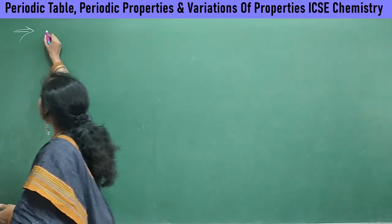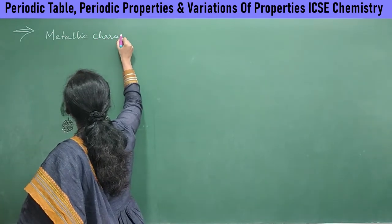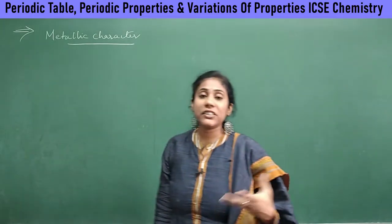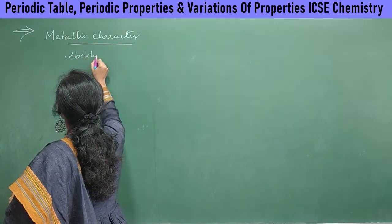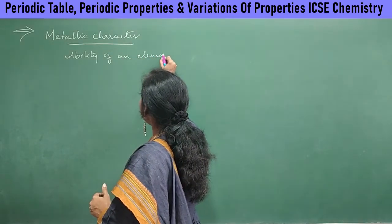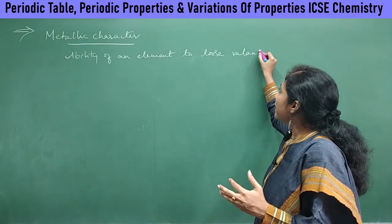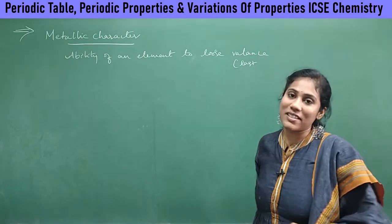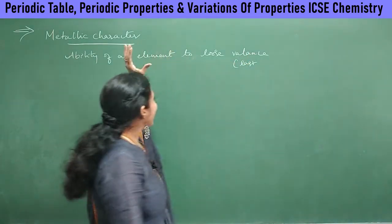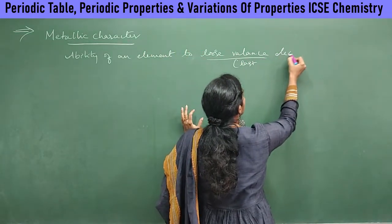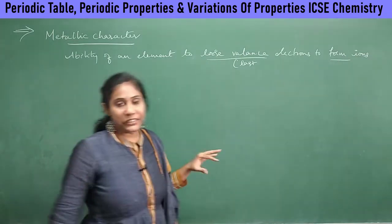Metallic character is dependent on size. Let us understand what exactly we mean by metallic character. It is the ability of an element to lose valence electrons — the electrons present in the last shell — to form ions. This is called metallic character.